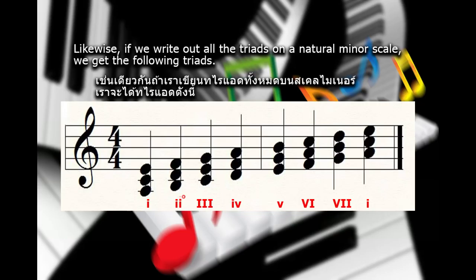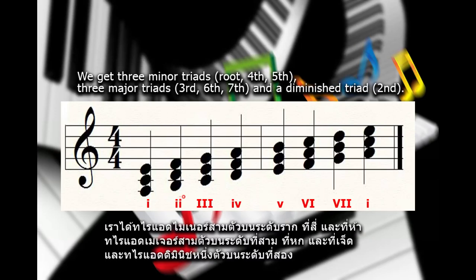Likewise, if we write out all the triads on a natural minor scale, we get the following triads. We get three minor triads on the root, fourth, fifth, three major triads on the third, sixth, seventh, and a diminished triad on the second.